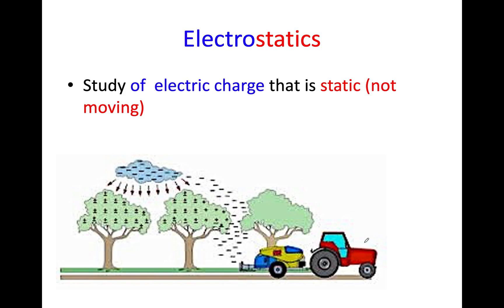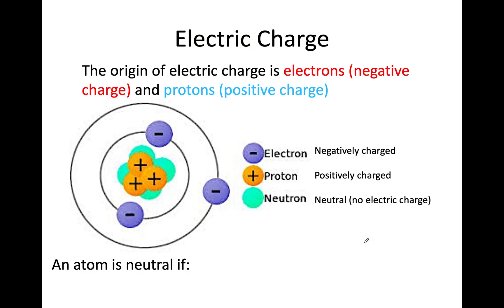Okay, so electrostatics, study of electric charge that is not moving. And we know what an atom looks like. You have your protons and neutrons in the centre, electrons around the outside, and it's these electrons that get transferred when objects rub together or when you do conduction or induction and stuff like that. An atom will be neutral if you have the same number of electrons as you do protons.